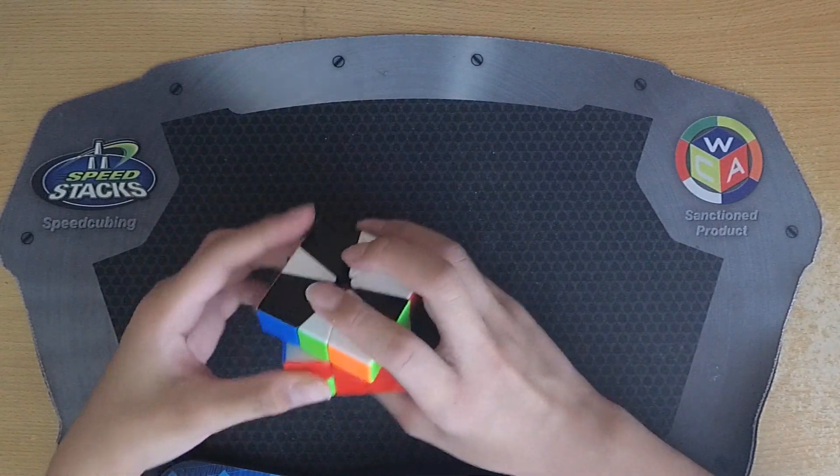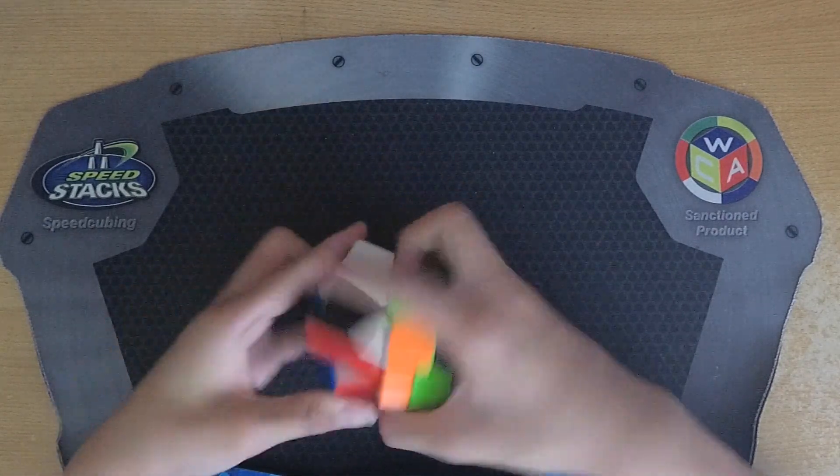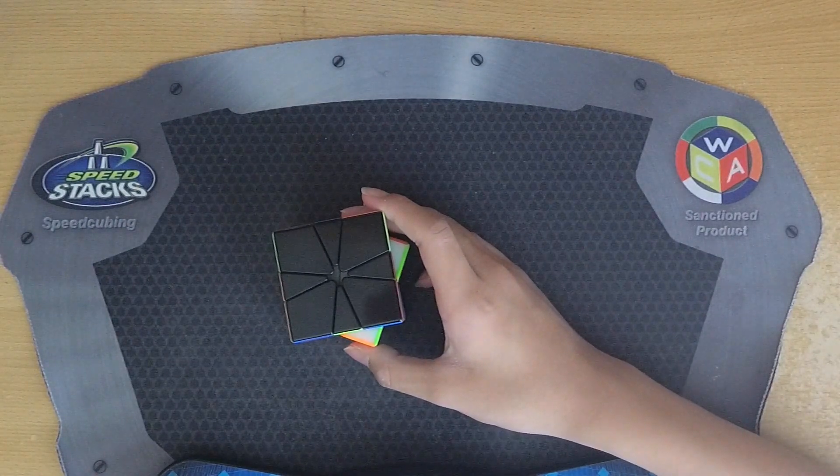Next I have this 3 slice CO which I'll just solve like this. Next 3-3 for EO.